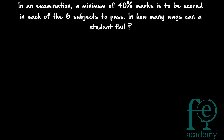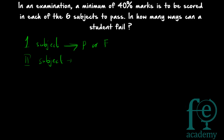In an examination, a minimum of 40% marks is to be scored in each of the 6 subjects to pass. In how many ways can a student fail? For one subject, there are only 2 outcomes — either pass or fail. For the second subject, again there are 2 possibilities. Similarly, for the third subject and up to all 6 subjects, there are 2 possibilities each.